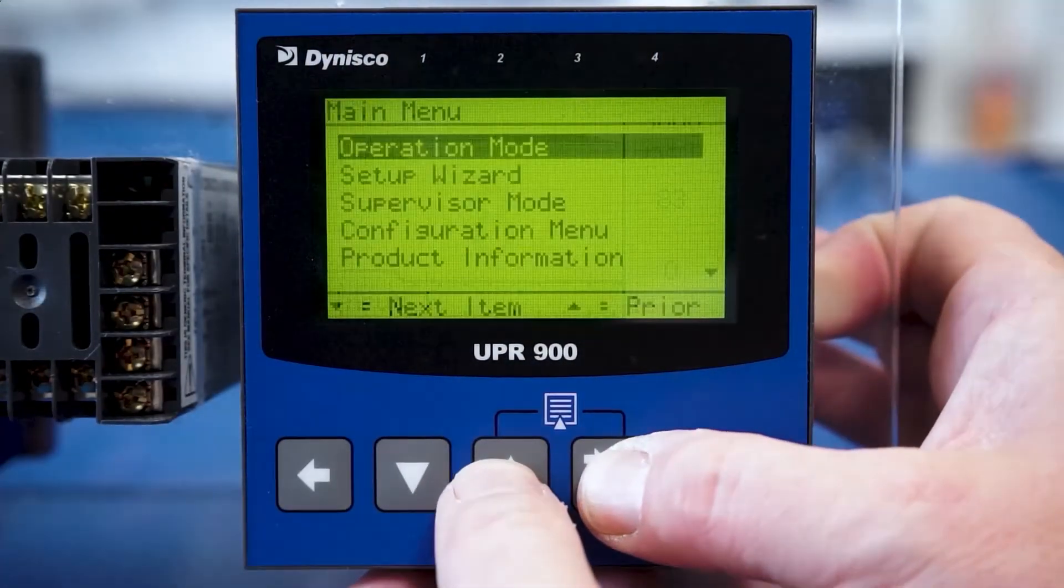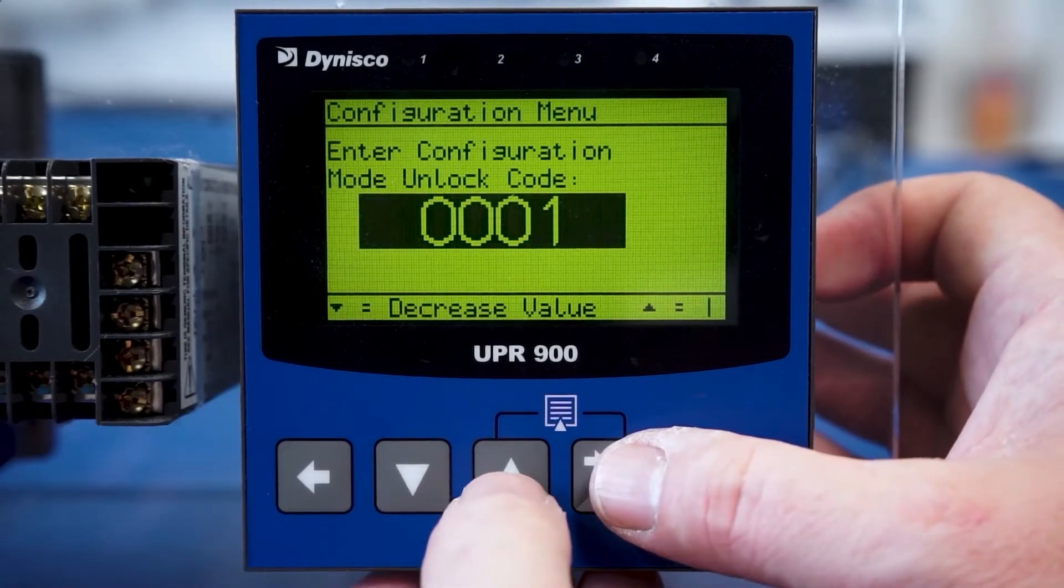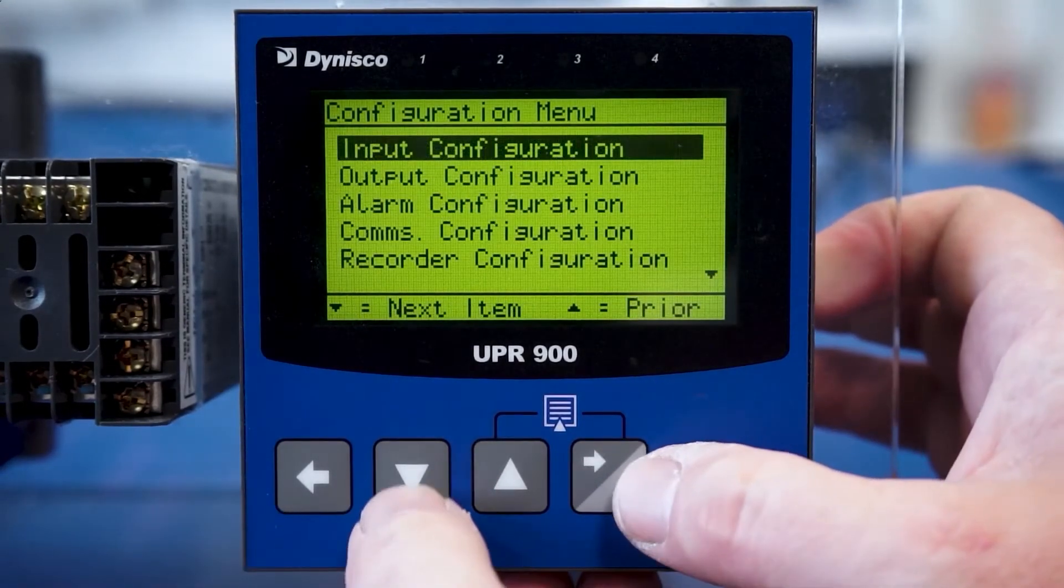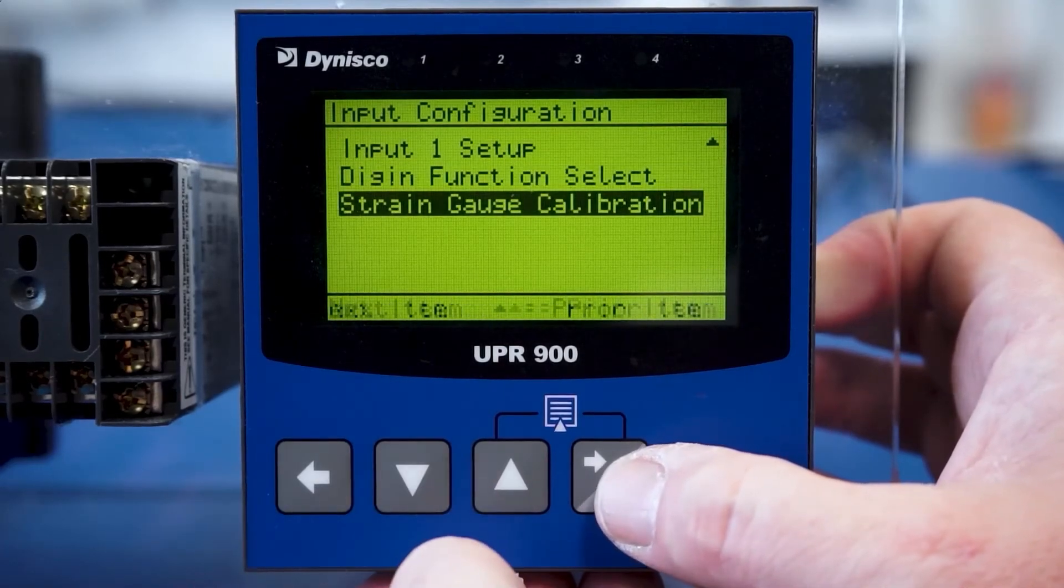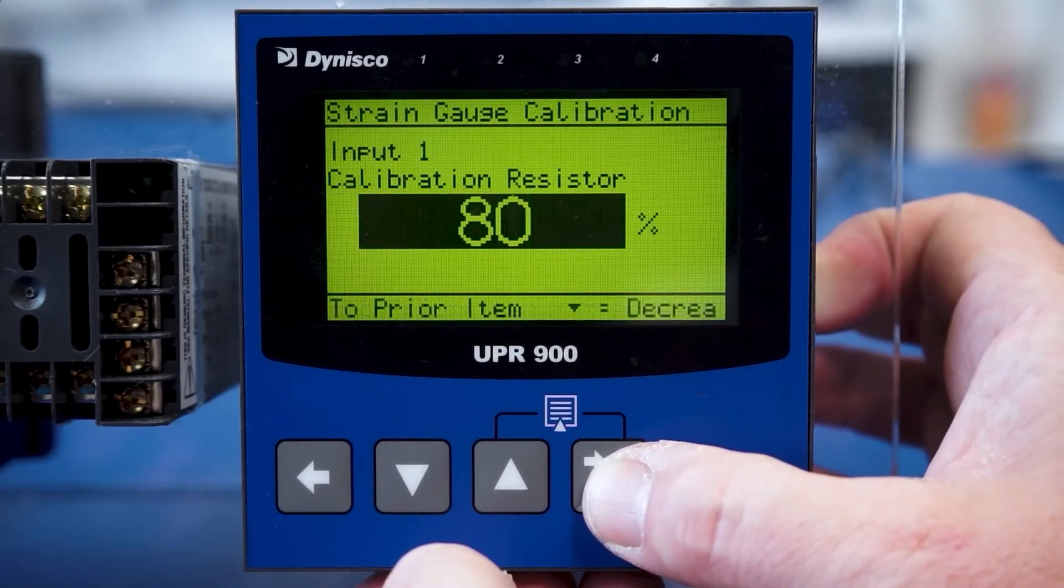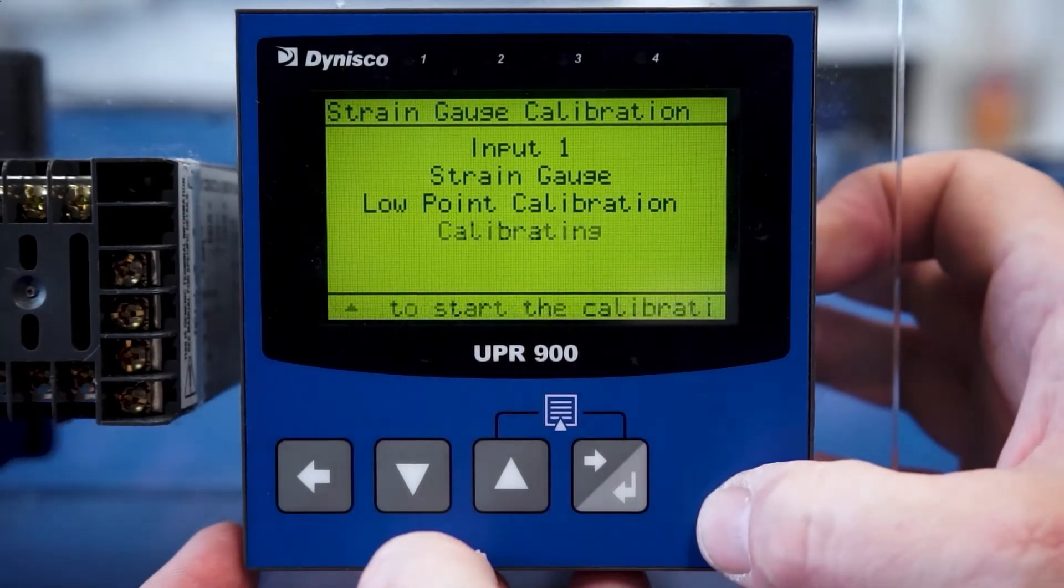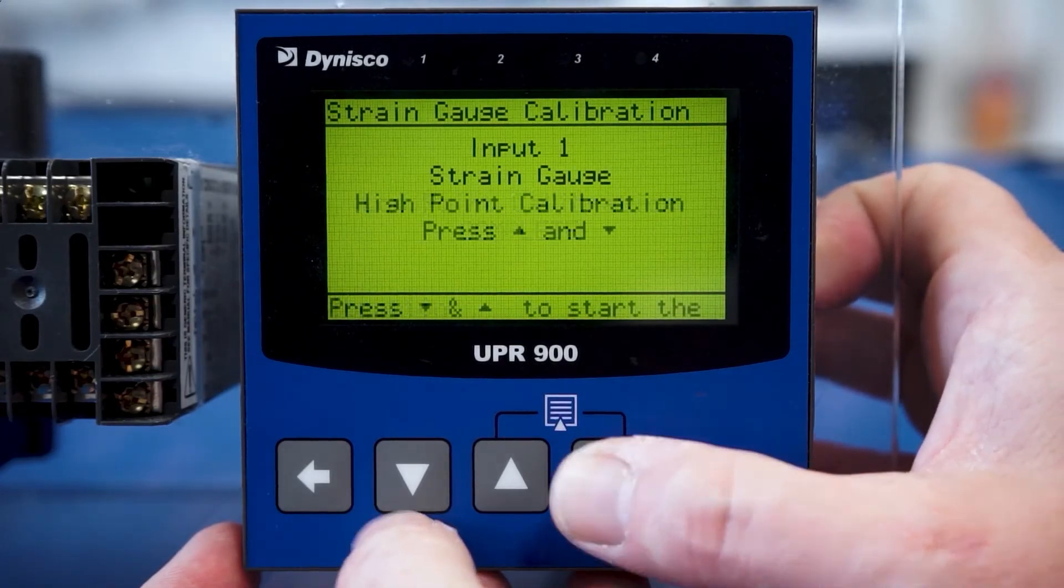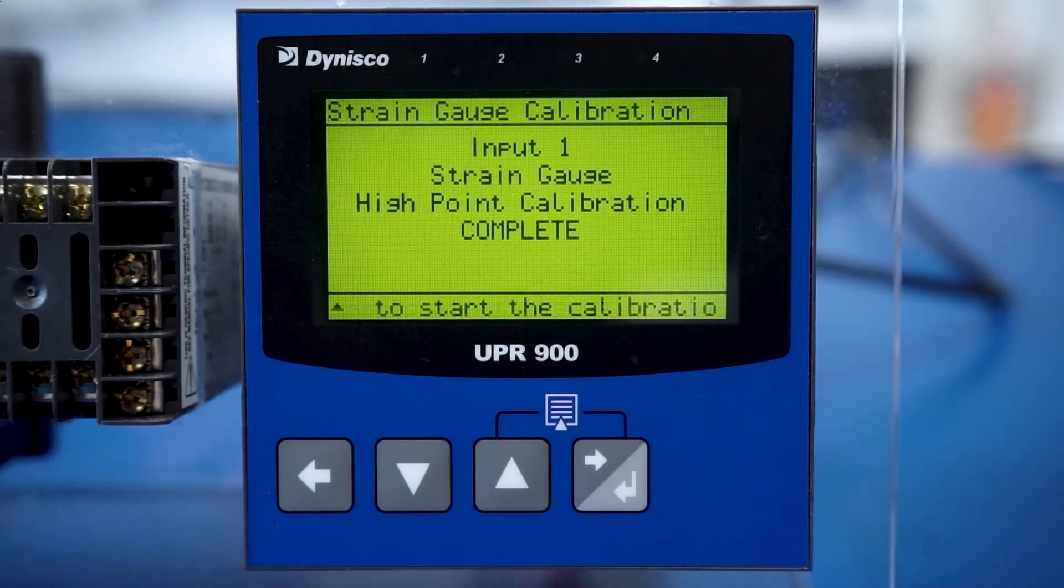The technician enters the submenu to access the configuration screen and enters the default unlock code of 10. Once in the configuration menu, the input configuration is selected to find strain gauge calibration. The instrument prompts the technician to test the high and low calibration points via the up and down arrow keys as demonstrated. Once the high and low points have been tested, the indication device will show calibration complete.